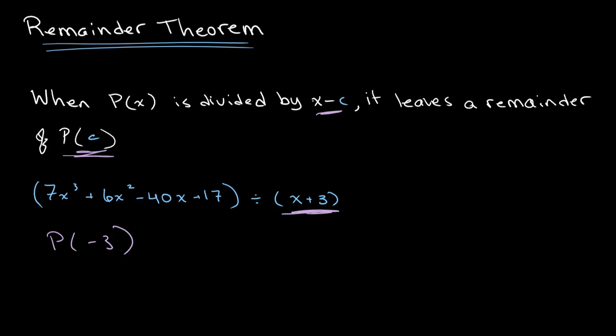And we just need to plug this into our equation in order to find our remainder. So to do this, we get 7(-3)³ + 6(-3)² - 40(-3) + 17.